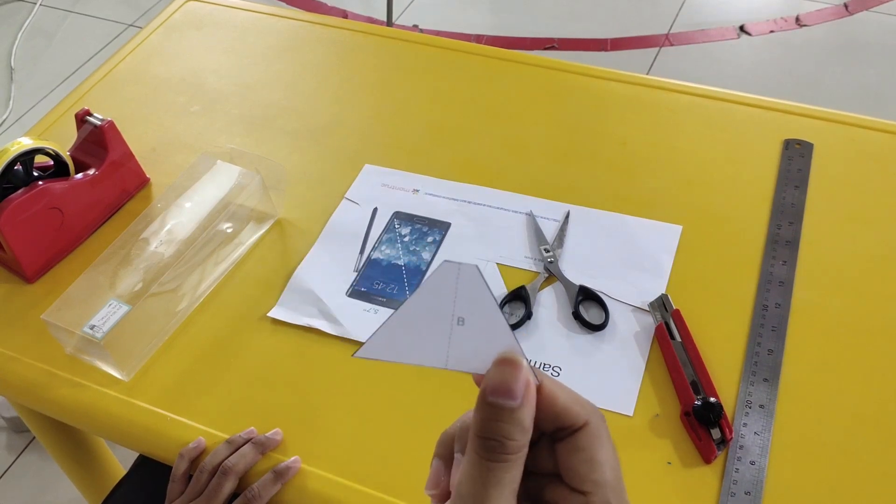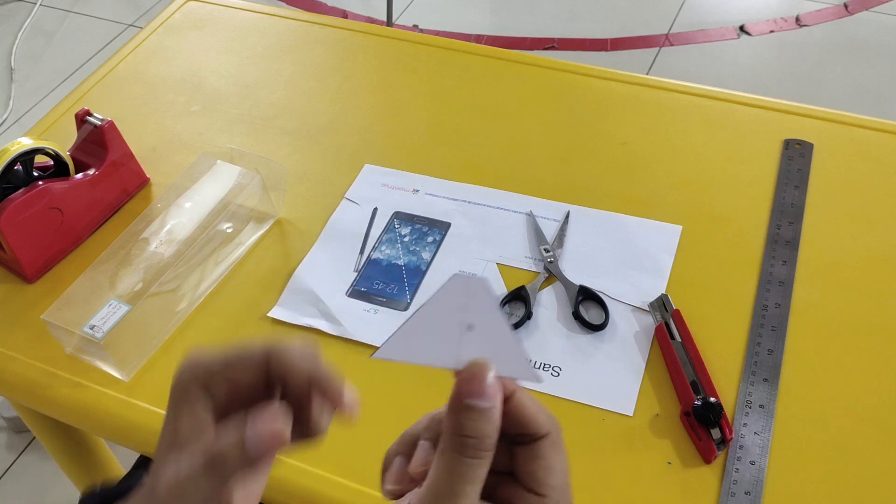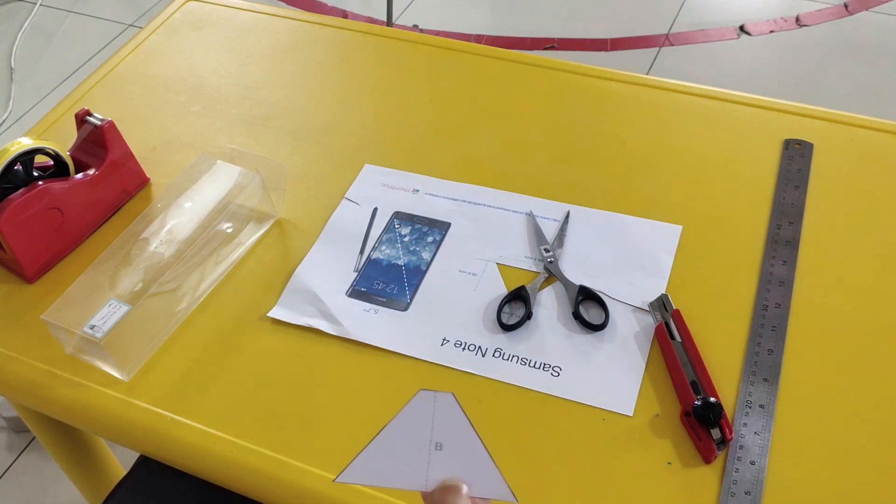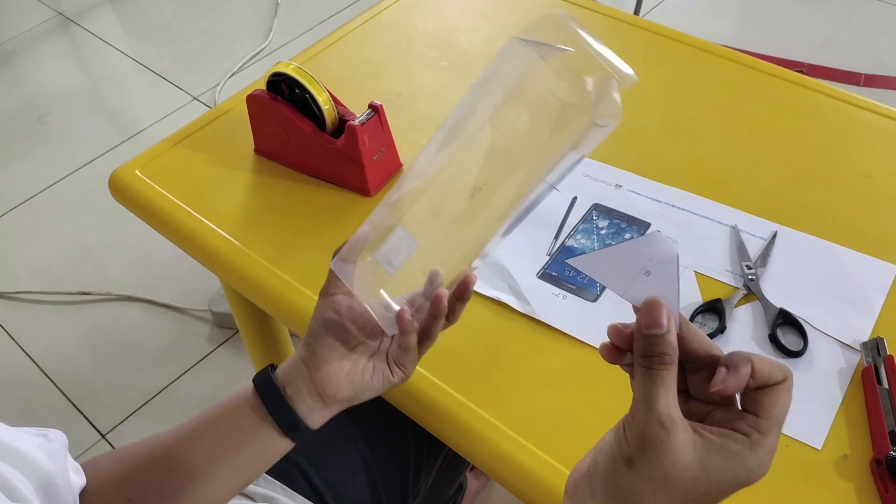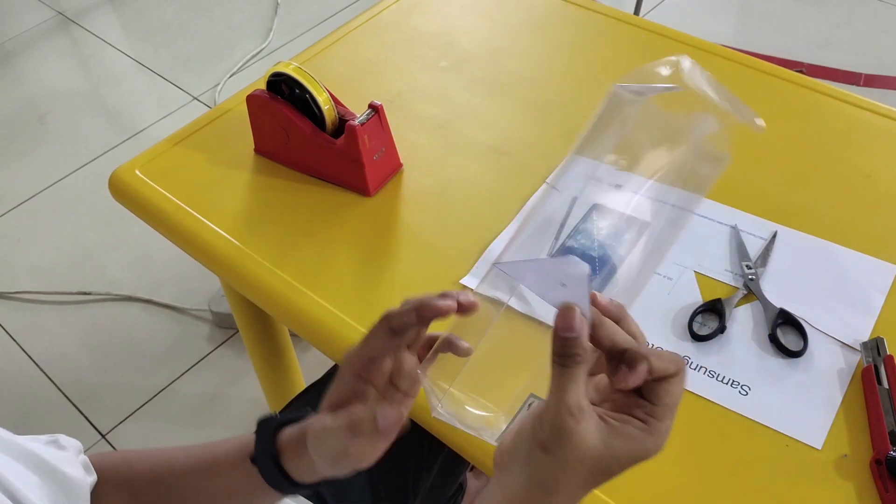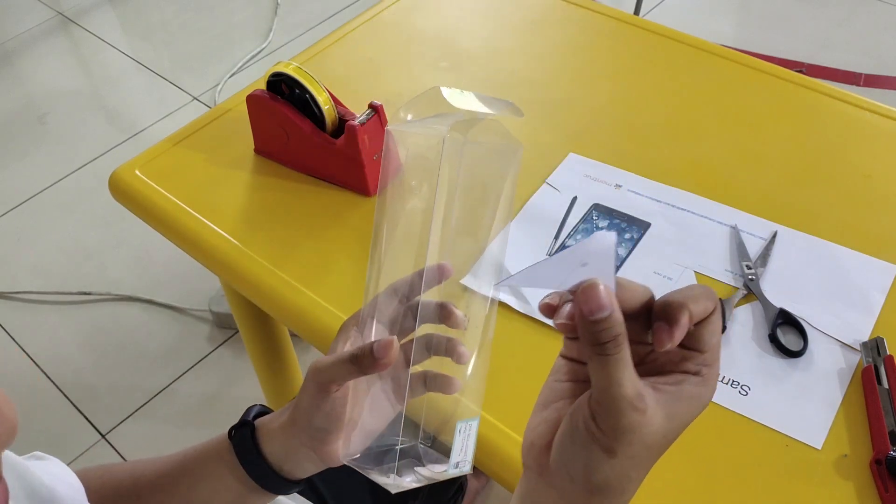Now, we get the shapes. Okay? This is how many sides? One, two, three, four. Yeah, four. Four side shapes like this. Now, we are going to put this on the plastic. We are going to cut this plastic following the template.